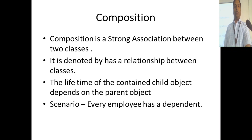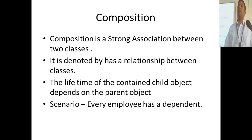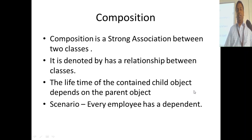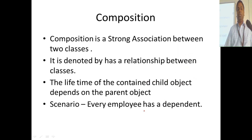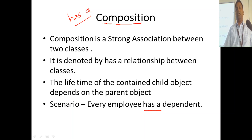What is composition? Composition is a type of association between two classes. If two classes have a 'has-a' kind of relationship — for example, employee has a dependent — then you can say that is a composition relationship.